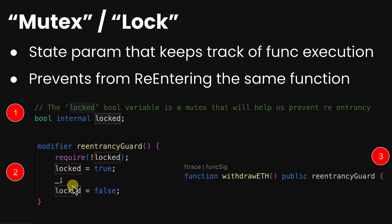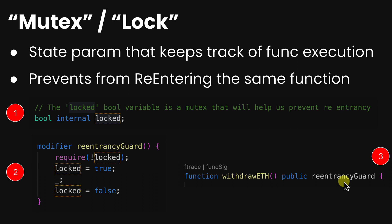For a legitimate transaction, there is no problem because once execution finishes, `locked` is changed back to false. However, this modifier alone is not enough. There may be cross-function re-entrancy where another important function affecting the same state is not protected by this modifier. Or there could be cross-contract re-entrancy where one contract is protected but another is not, yet both modify the same state. Re-entrancy can come in many forms.